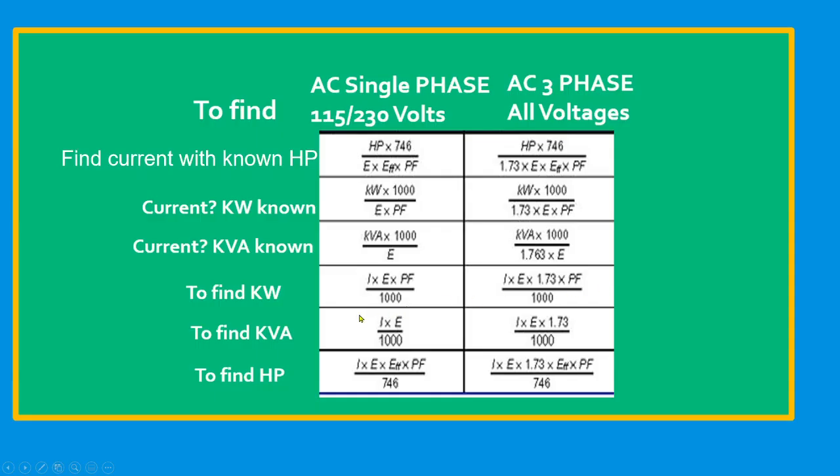Next, this is the formula to find horsepower, kilowatt and kVA. AC single phase and AC three phase.